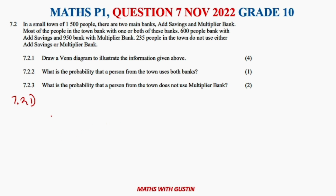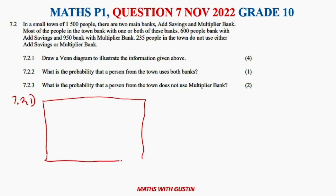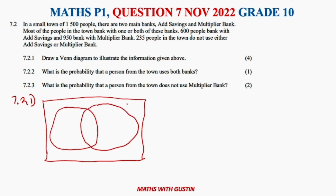Question 7.2.1: draw the Venn diagram. 600 people bank with AD Bank, 950 bank with Multiplier Bank, and 205 do not use either bank. The Venn diagram has a box with two overlapping circles — one for AD Bank and one for Multiplier Bank, with the 205 placed outside both circles.